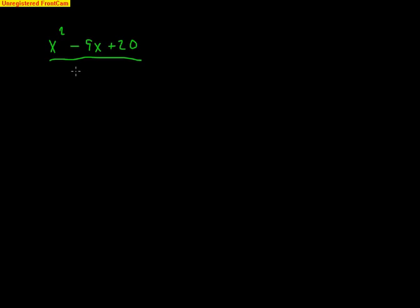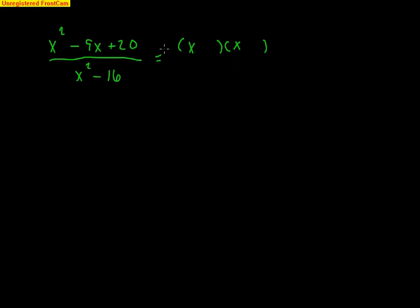On top, I could try to do the take-out, but there's nothing common I could take out. So it's a trinomial and I'm going to have to do my normal factoring: x times x makes the x squared. For 20, I need to multiply to get 20 and add to get the 9 in the middle.